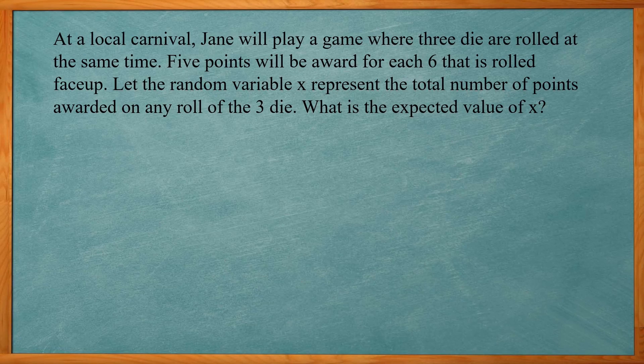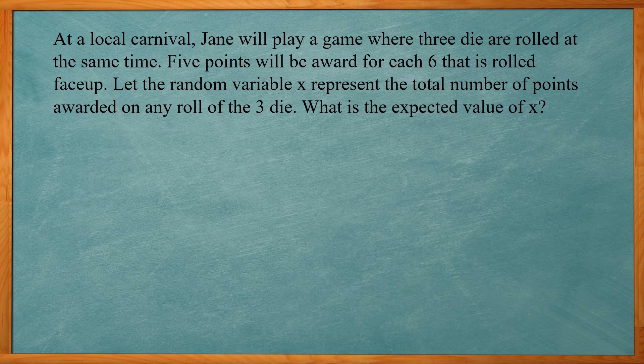So this one reads, at a local carnival, Jane will play a game where three die are rolled at the same time. Five points will be awarded for each six that is rolled face-up. Let the random variable X represent the total number of points awarded on any roll of the three die. What is the expected value of X?